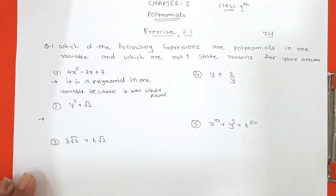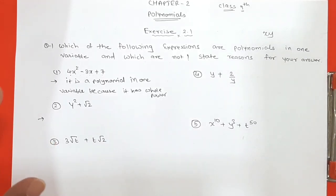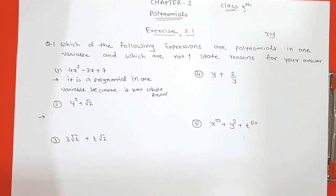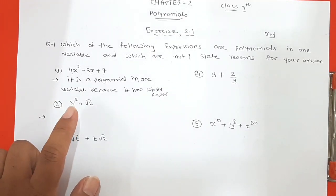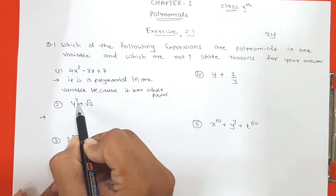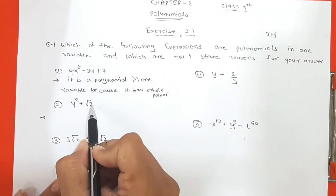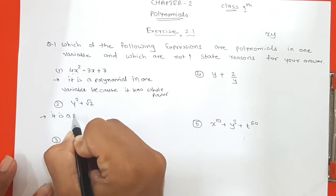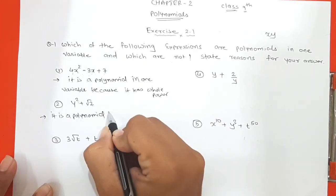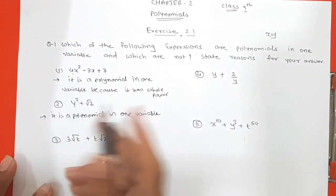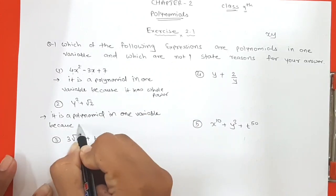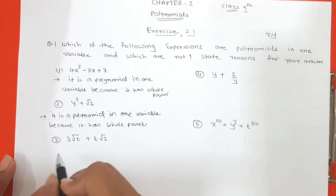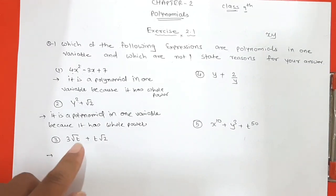The fourth expression is y plus 2 upon y. The variable y appears in the denominator. Bringing it to the numerator gives y raised to minus 1, making the power negative. So it is not a polynomial because the power of the variable is negative.